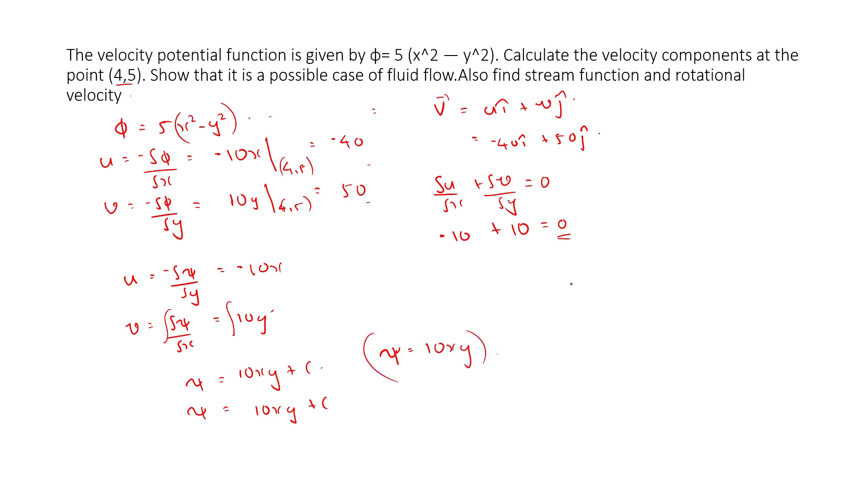And rotational velocity ωz is given by the formula (1/2)(∂v/∂x - ∂u/∂y). This is equal to (1/2) into ∂v/∂x is 0 and ∂u/∂y is 0. So that means this will be 0. So rotational velocity is 0.